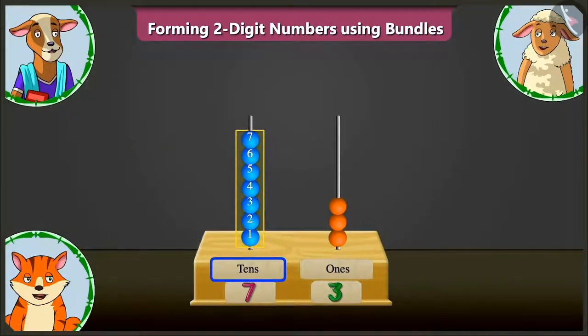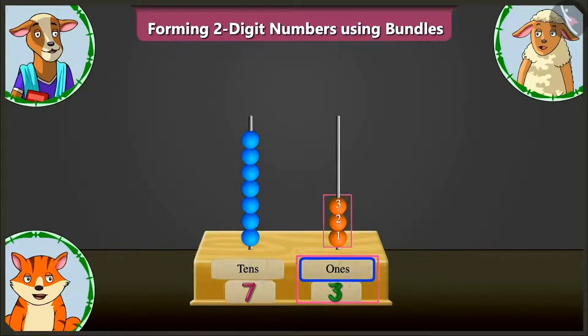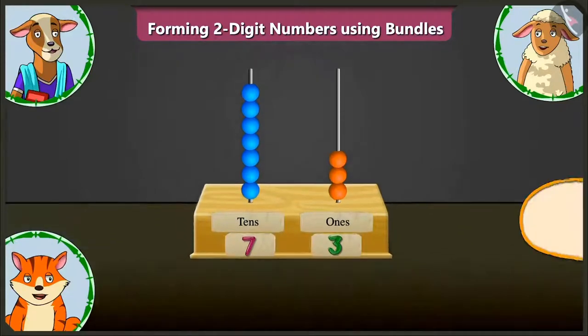Now, here, in the tens box, seven tens means seventy. And in the ones box, three ones means three. So, adding seventy and three makes it number seventy-three. Absolutely correct.